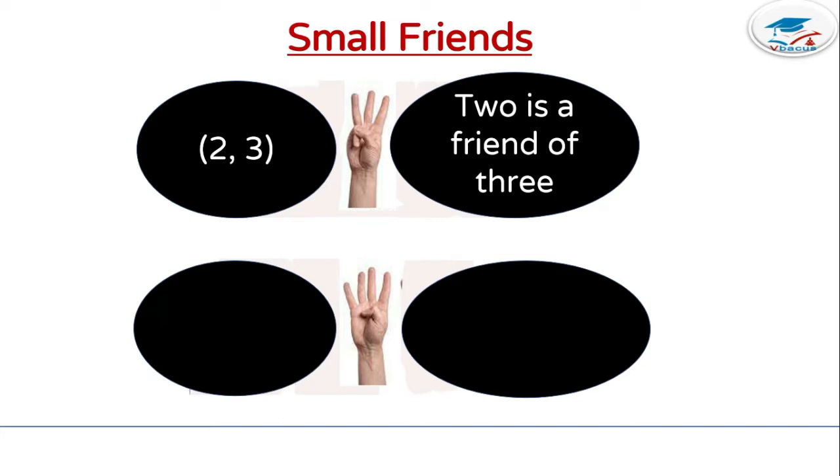In the next figure, how many fingers are open? 4. How many fingers are closed? 1. So, 1 is a friend of 4. You can write it 1, 4.